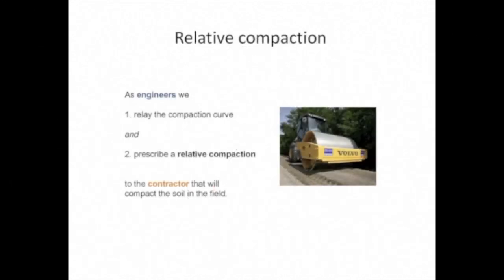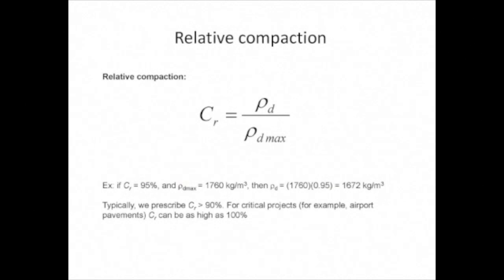As engineers, our primary job with respect to compaction is to give the contractor the information required to appropriately compact the soil in the field. The engineer communicates the compaction curve and suggests a range of water contents for efficient field compaction. In addition, the engineer prescribes a relative compaction for the project — the ratio of dry mass density achieved in the field to that achieved in the lab. For example, a project calling for 95% relative compaction with a lab maximum dry density of 1760 kg/m³ requires field compaction to at least 1672 kg/m³. In general, relative compaction figures are above 90%.